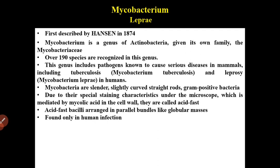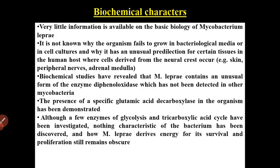Found only in human infection. Biochemical characters: very little information is available on the basic biology of Mycobacterium leprae. It is not known why the organism fails to grow in bacteriological media or in cell culture, and why it has an unusual predilection for certain tissues in the human host — cells derived from the neural crest — for example, skin, peripheral nerves, adrenal medulla. Biochemical studies have revealed that M. leprae contains an unusual form of the enzyme diphenoloxidase, which has not been detected in other mycobacteria.